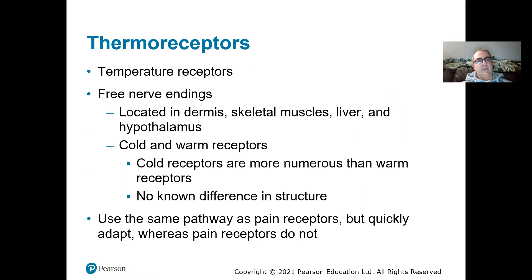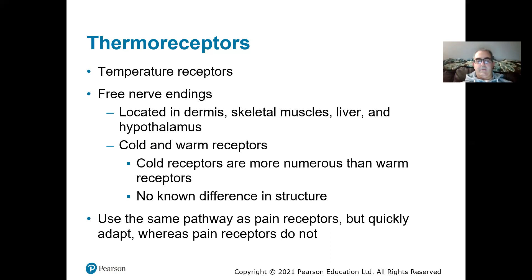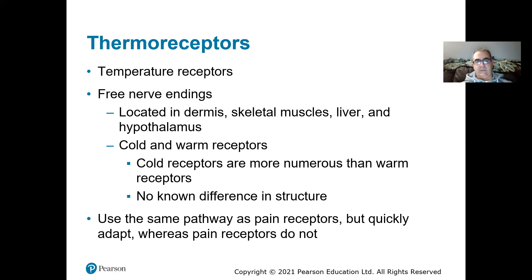Thermoreceptors detect temperature. We have them in our dermis, skeletal muscles, liver, and hypothalamus. We have cold receptors and warm receptors. They use the same pathways as pain receptors, but they quickly adapt. Pain does not really adapt, but temperature receptors, as we talked about with jumping into a cold lake, do adapt pretty quickly. It's not life-threatening, so your brain allows those to adapt.